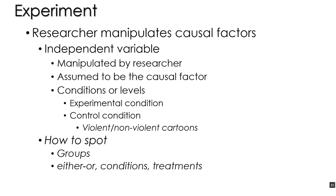When reading an experiment, if you have a hard time spotting the independent variable, a spotter's guide would direct you to look for the term 'groups,' or the phrase 'either-or,' or the words 'condition' or 'treatments.' When an author uses those words, they are usually referring to an independent variable.